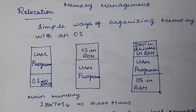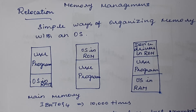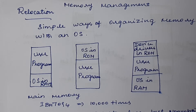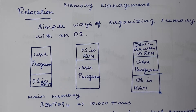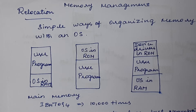From a programmer's point of view, main memory should ideally be private, very large, fast, and non-volatile — meaning contents are not erased when power is switched off — and also inexpensive. However, we have not yet achieved such an ideal main memory.